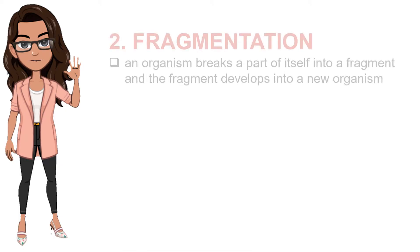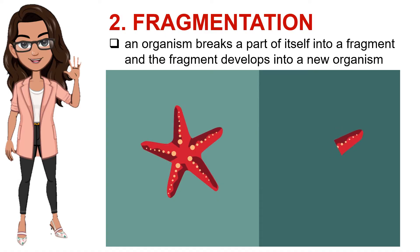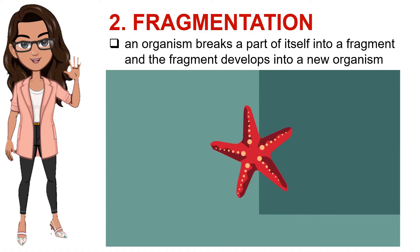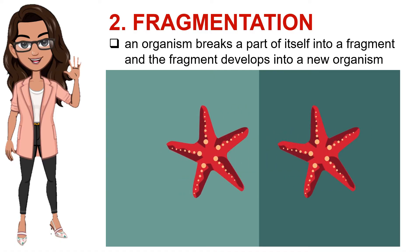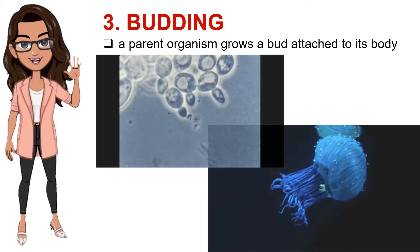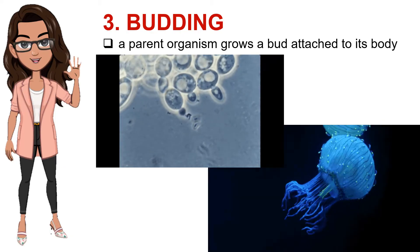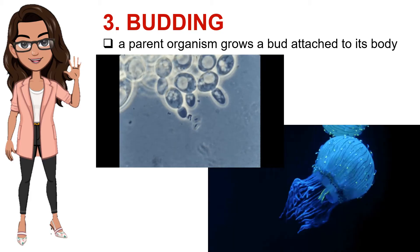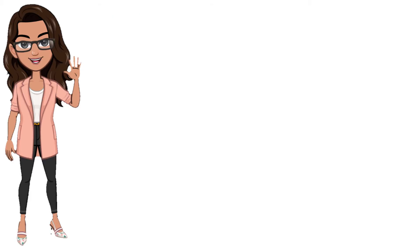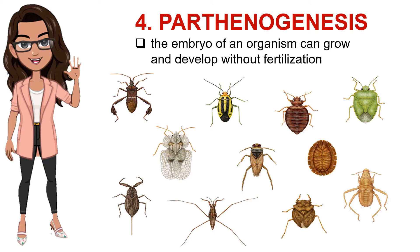Second is fragmentation — it occurs when an organism breaks a part of itself into a fragment and the fragment develops into a new organism. Examples are starfish and aquatic flatworms. The third type of asexual reproduction is budding. It happens when a parent organism grows a bud attached to its body; when the bud is developed, it detaches and forms a new organism. Examples are yeast and jellyfish. The fourth type is parthenogenesis, which occurs when the embryo of an organism can grow and develop without fertilization. Examples are some species of ants and honeybees.